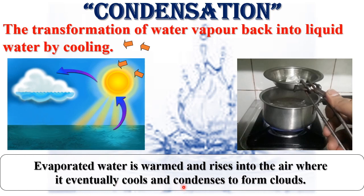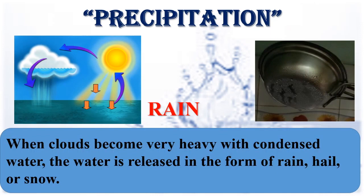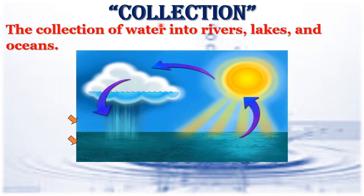Precipitation: when clouds become very heavy with condensed water, the water is released in the form of rain, hail, or snow. Collection: the collection of water into rivers, lakes, and oceans.